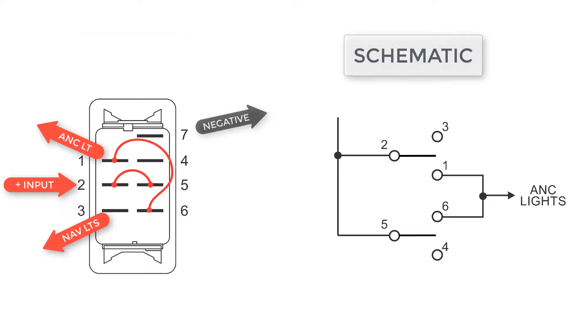The negative goes on terminal 7. Now the switch is currently shown in the center off position, but if we rock the switch up, you can see how the jumpers that we've applied allow both the nav and anchor light to come on, whereas in the down position only the anchor light will illuminate.